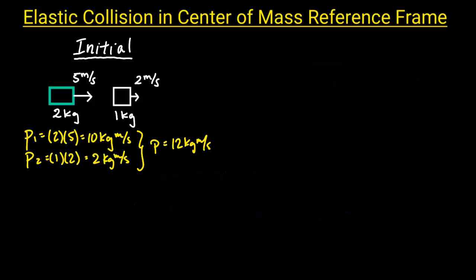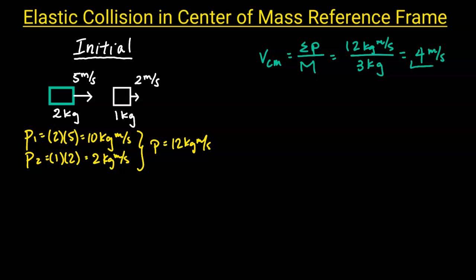Momentum is mass times velocity. So before the collision, object 1 has a momentum of 2 times 5, which is 10 kilograms meters per second. Object 2 has a momentum of 1 times 2, which is 2 kilograms meters per second. So the total momentum before the collision is 12 kilograms meters per second. Using this, we can calculate the center of mass velocity, which is equal to the sum of the momentum divided by the total mass. The sum of the momentum is 12 kilograms meters per second and the total mass is 2 plus 1, which is 3 kilograms. So we have 12 divided by 3, which is 4 meters per second — the velocity of the center of mass.